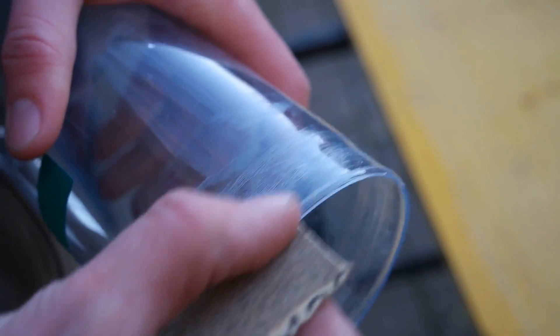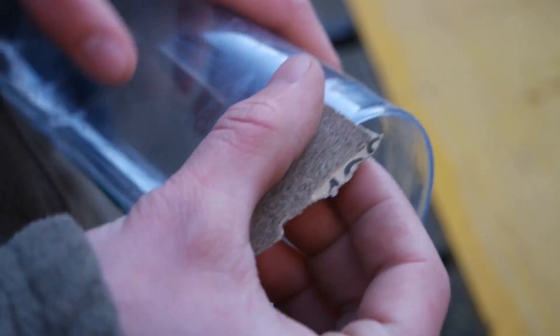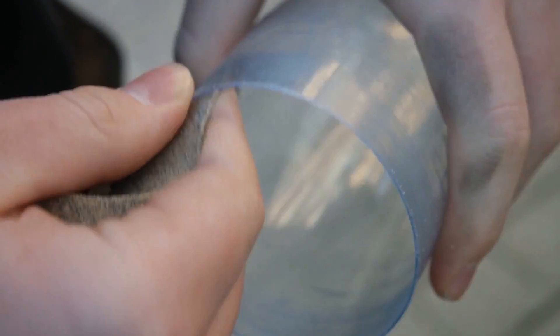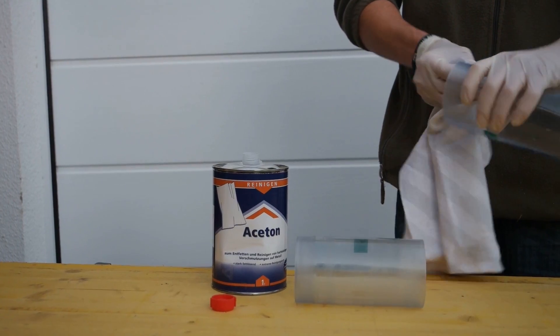Before you glue the bottle sections together you have to sand the shrunken areas on the outside and the other bottle ends on the inside. Furthermore you should also clean them.